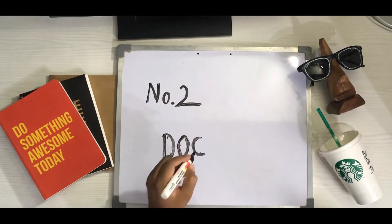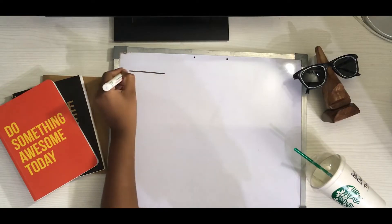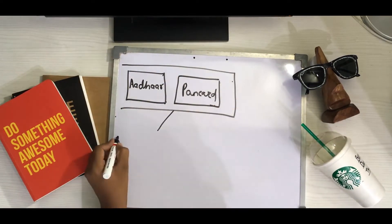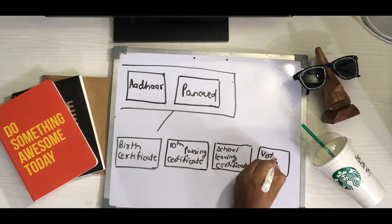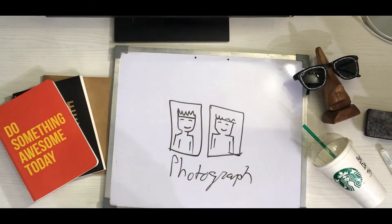Number two: documents. You will require two major types of documents — one which has your identity proof and the other which has your address proof. The primary documents you will require are your Aadhar card and your PAN card. If you don't have your PAN card, don't worry — you can use your 10th passing certificate, birth certificate, voter ID, passport, or anything which has your address proof or identity proof. You also need two ID-size photographs. The minimum educational requirement to get your driving license in India is at least 10th pass.